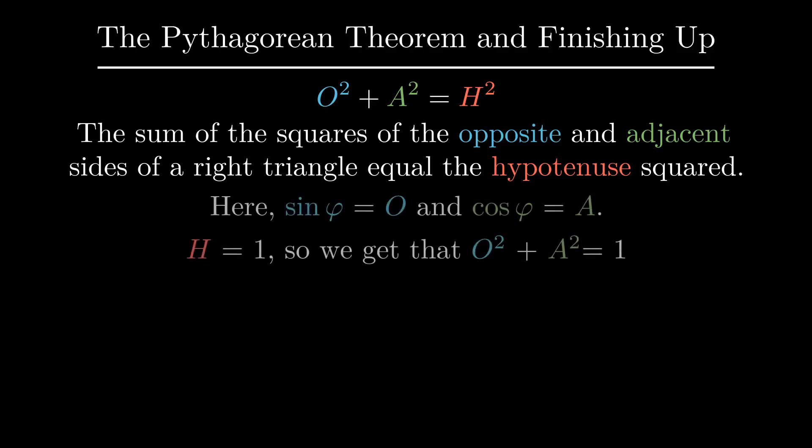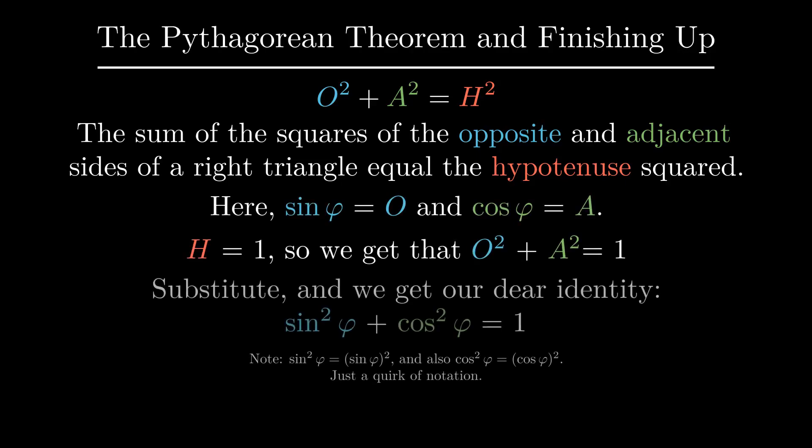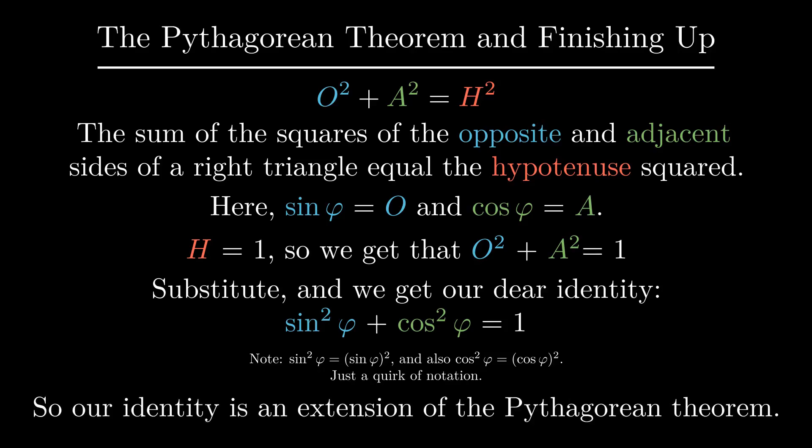Since we call the length of these sides sine of phi and cosine of phi, for the opposite and adjacent respectively, we plug these in and get our dear identity. Note that the sine squared of phi is the same as the sine of phi squared, and the same goes for the cosine of phi, just a quirk of notation. So our identity is essentially just an extension of the Pythagorean theorem.